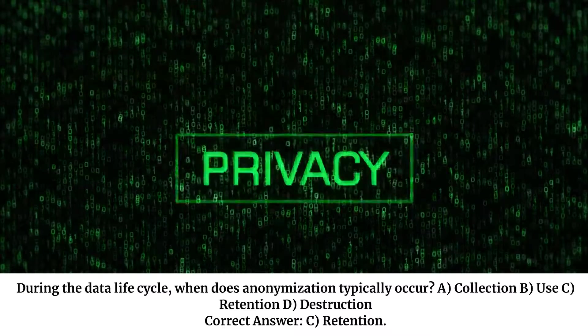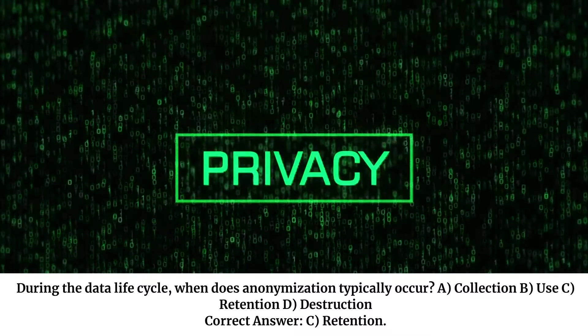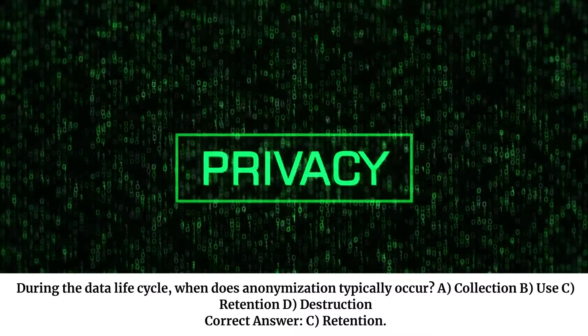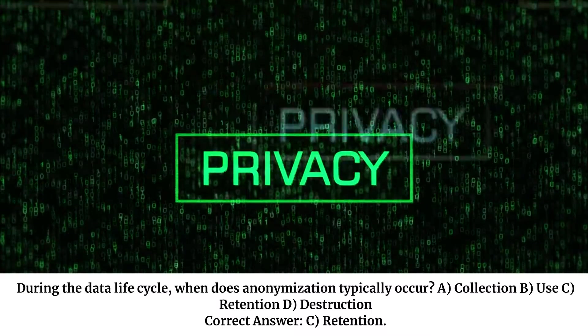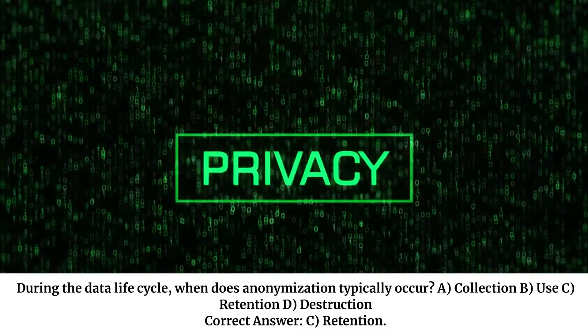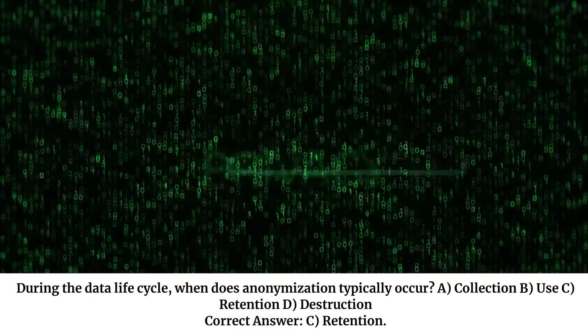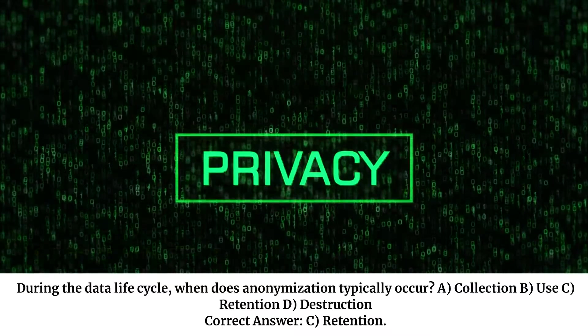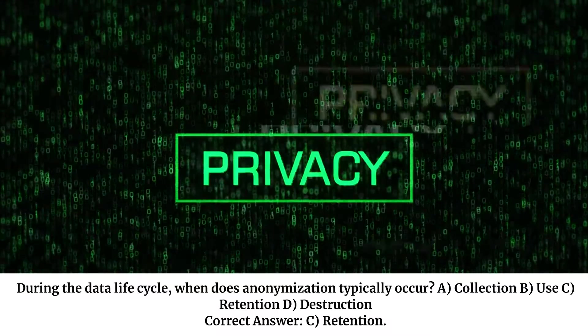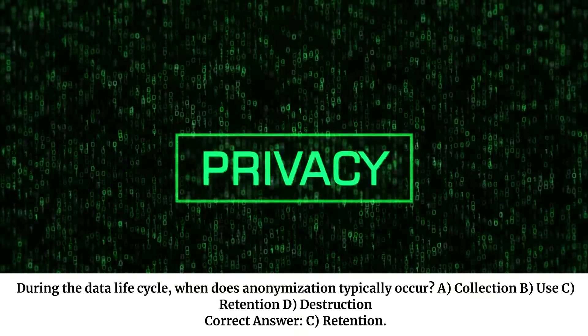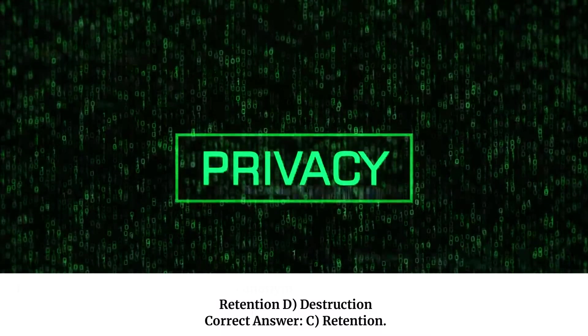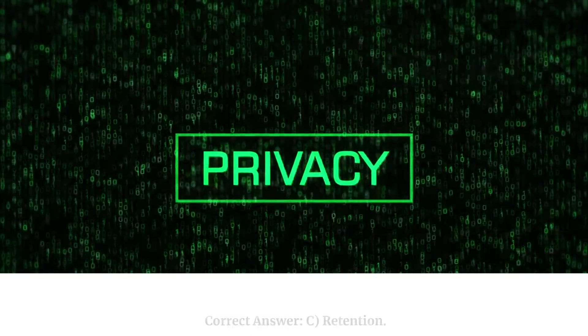During the data life cycle, when does anonymization typically occur? A. Collection. B. Use. C. Retention. D. Destruction. Correct answer: C. Retention.